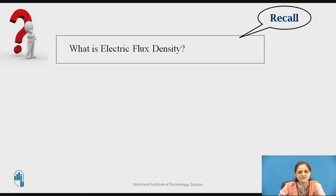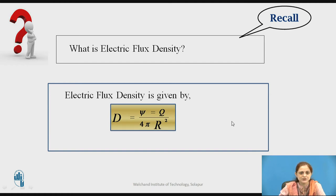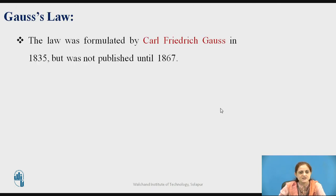Before going to start today's lecture, you can pause the video here and recall what is electric flux density. To define the Gauss law, this knowledge of electric flux density is required. The electric flux density is given by the equation: D is equal to psi upon 4 pi r square. Psi can be equated to Q, so D-bar is nothing but Q upon 4 pi r square.